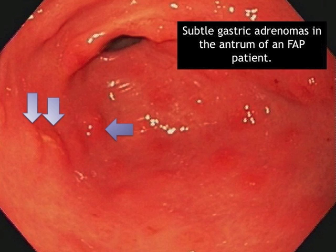This is another picture from inside the stomach of a patient with FAP. We are looking at the antrum. At the top center you can see the entrance into the small intestine from the stomach. The arrows point out small subtle bumps which are in fact gastric adenomas.